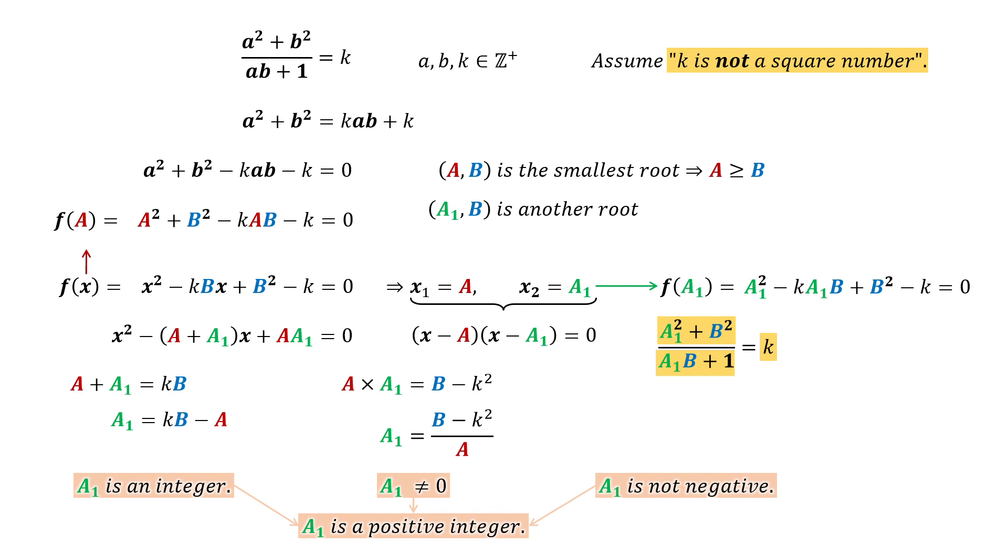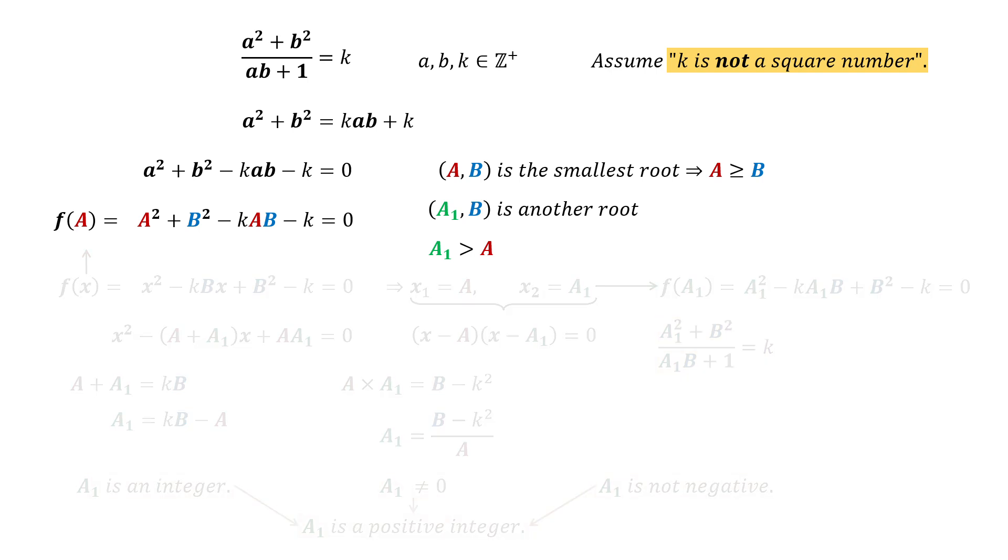Since A and B are the smallest pairs, we can conclude that A1 must be greater than A. This is our first conclusion.